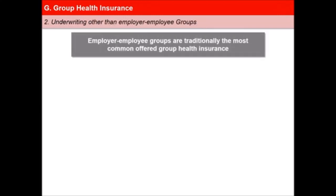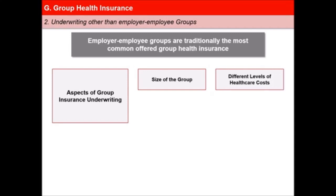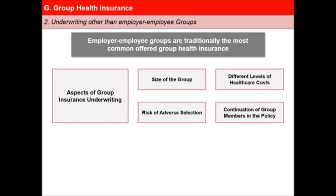Employer and employee groups are traditionally the most common offered group health insurance. Though basic underwriting considerations for diverse groups are similar to generally accepted group insurance underwriting factors, the additional aspects include: size of the group, as a small group size may suffer from frequent changes; different levels of health care costs in different geographical regions; risk of adverse selection in case all group constituents do not participate in the group health insurance plan; and continuation of members as a group in the policy.